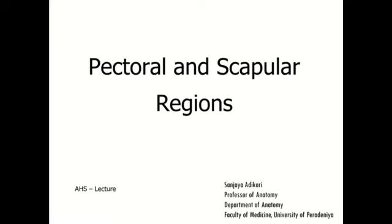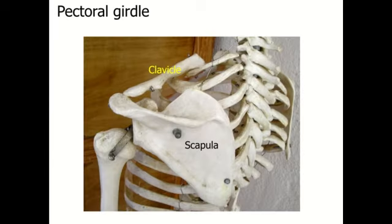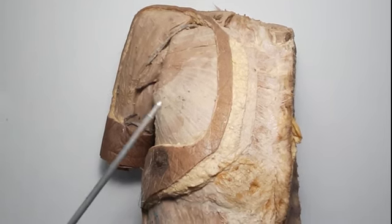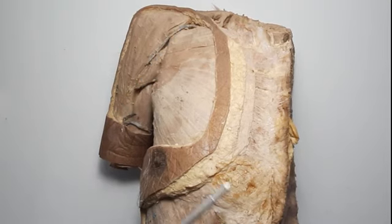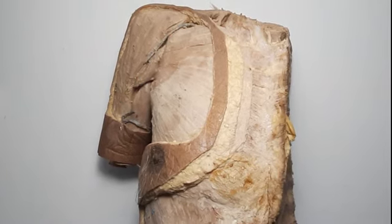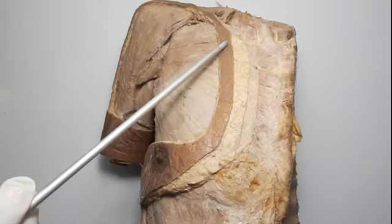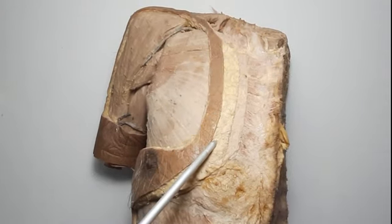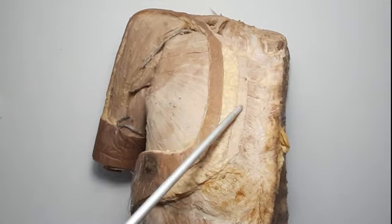Pectoral and Scapular Regions. Muscles of the pectoral and scapular regions are attached to the pectoral girdle, formed by the clavicle and the scapula. We are going to study the pectoral region with this specimen. Skin has been removed in certain areas to show the underlying structures. Here you can see remaining skin, subcutaneous tissue underneath the skin, and the pectoral fascia.